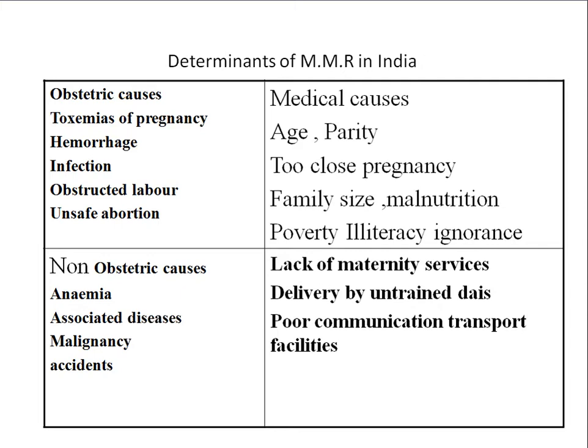Poor communication and transport facilities are also a cause of maternal mortality. If there is a sudden complication during delivery — hemorrhage or cephalopelvic disproportion requiring a higher center — delays in transport can result in death of both the mother and infant. Lack of transport facilities is a significant cause of maternal mortality.